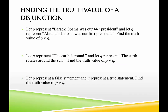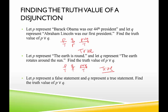Let's look at some examples of disjunctions. P represents 'Barack Obama was our 44th president' — true — and Q represents 'Abraham Lincoln was our first president' — false. True or false yields a true disjunction. Next, P is 'the earth is round' — true — and Q is 'the earth rotates around the sun' — true. The disjunction is true. Finally, P represents a false statement and Q represents a true statement — false or true is true. In order for a disjunction to be false, it needs to be false or false.